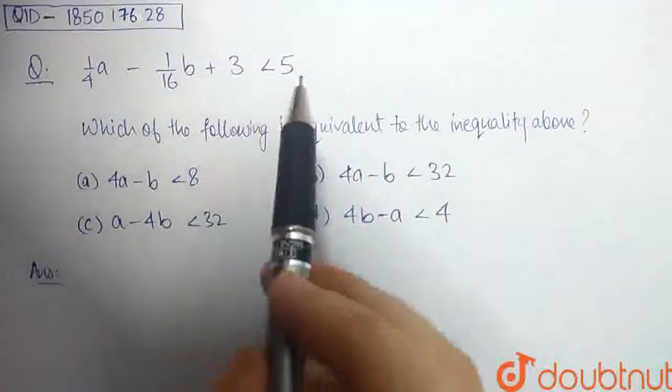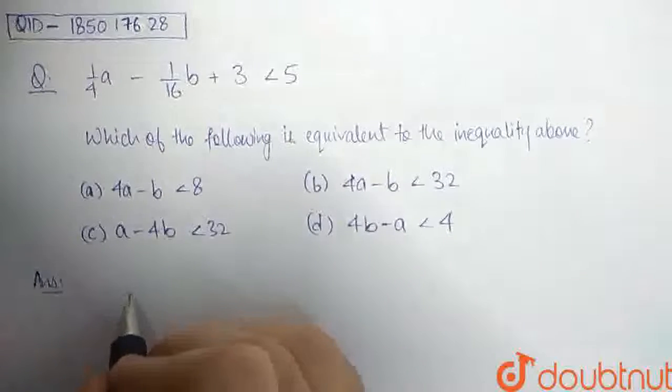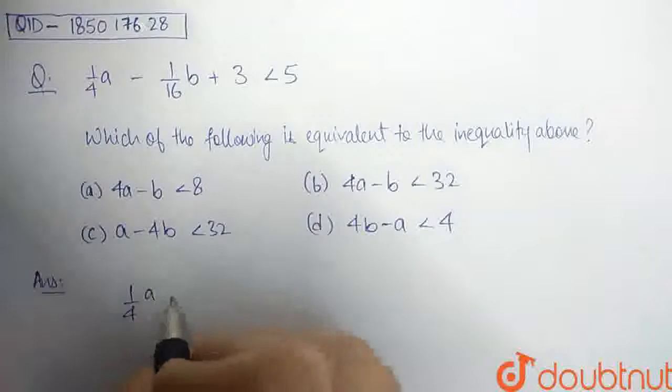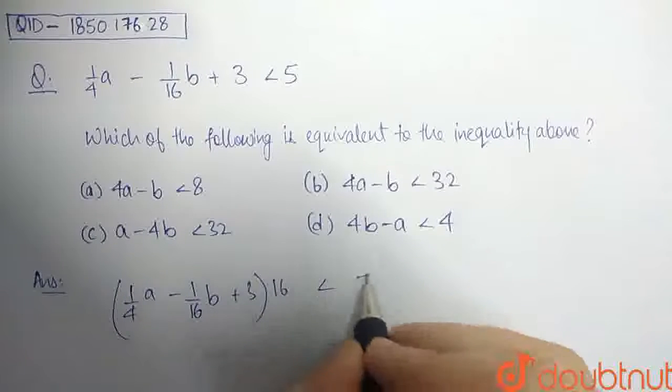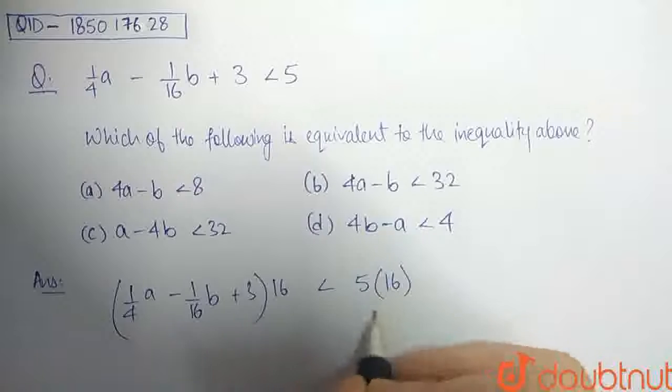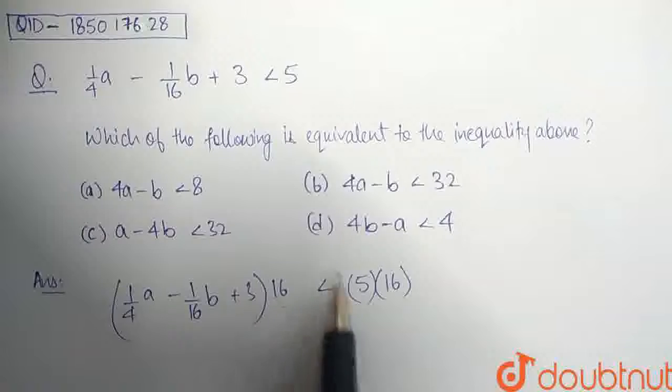I will be multiplying both the left hand side and the right hand side by 16. So we have 1 by 4a minus 1 by 16b plus 3 times 16, which is less than 5 times 16. Since 16 is a positive number, it does not affect the inequality.